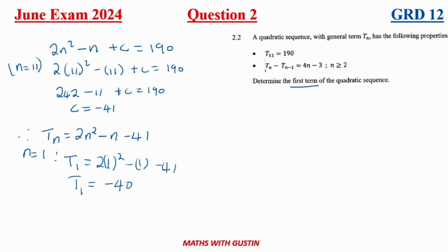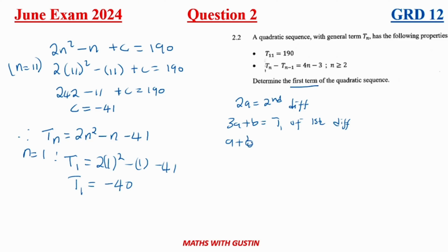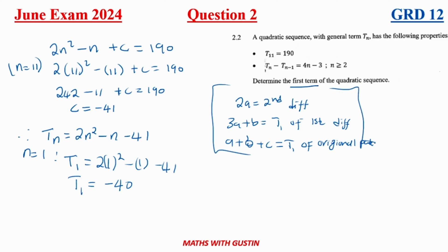Please remember these key formulas for quadratic patterns — they are not on the formula sheet: 2a equals the second difference of the quadratic sequence; 3a plus b equals t1 of the first difference; and a plus b plus c equals t1 of the original number pattern.